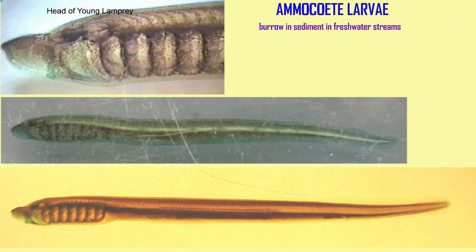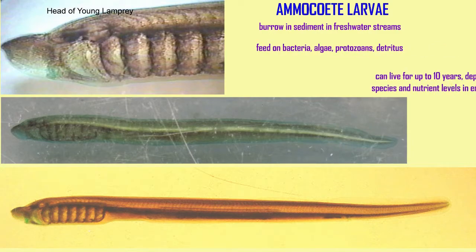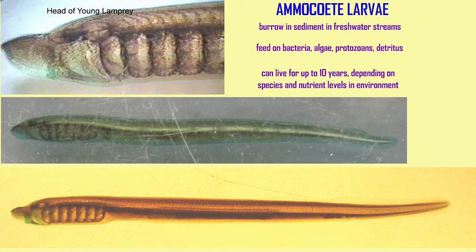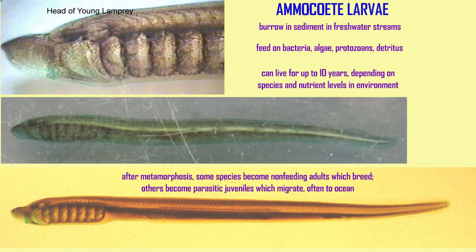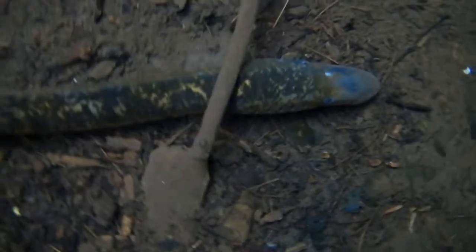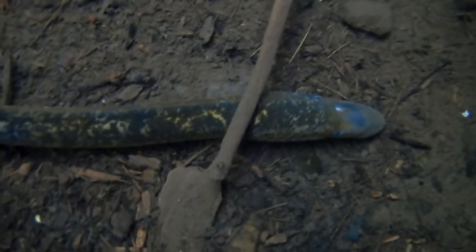Non-parasitic species produce far fewer eggs. The eggs hatch to a larval form known as an amocete. These burrow into the sediment of fresh water streams, where they feed on bacteria, algae, protozoans, and detritus. They can live for years — up to 10 years — and this length of time depends on the species and the nutrient levels in the environment.